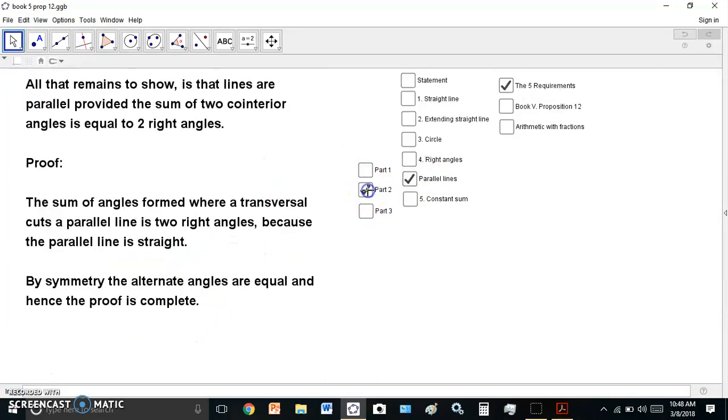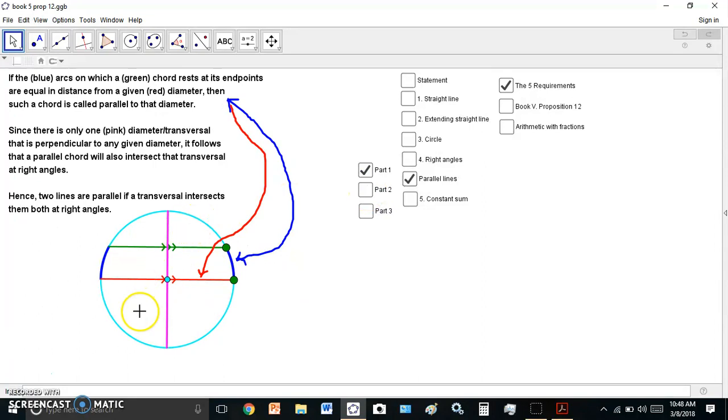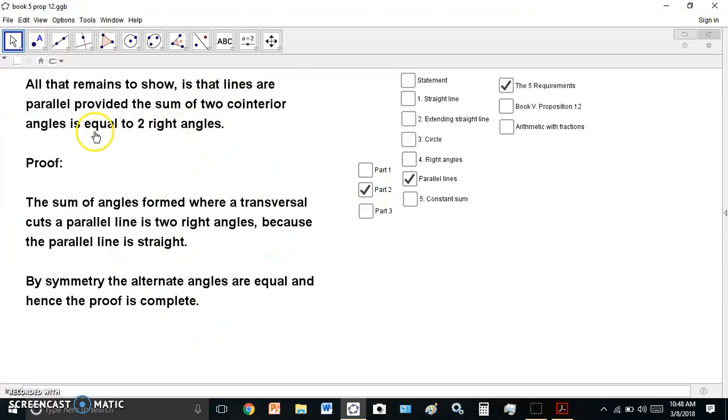Which lead us up to the final conclusion that cointerior angles always have a sum of two right angles, regardless of whether the diameters are perpendicular or not, and there's a chord. So for example, if we look at this section here, if this diameter here was slanted like that, then the cointerior angles are still two right angles, and that's what I proved. And then also, it's very easy to see from this diagram here that you can also define parallel lines in this way, that it's a chord which has two equal arcs on either side leading to the same diameter. And by symmetry, the alternate angles are equal, and hence the proof is complete.